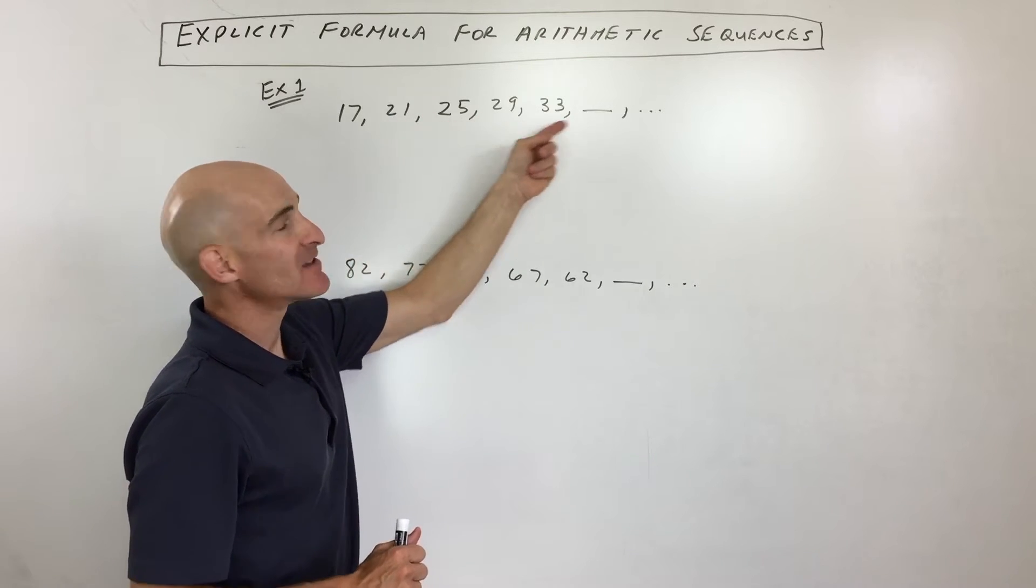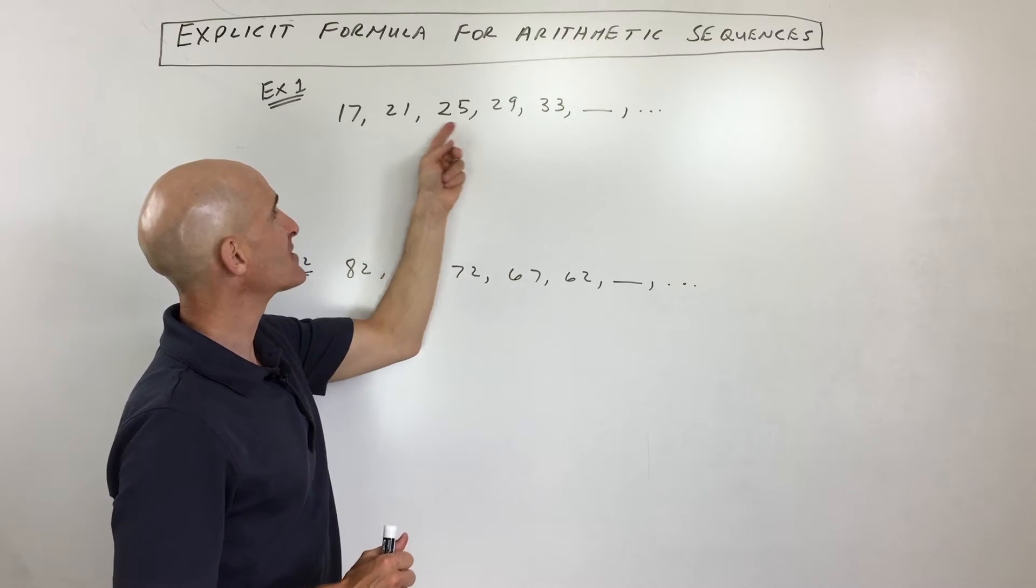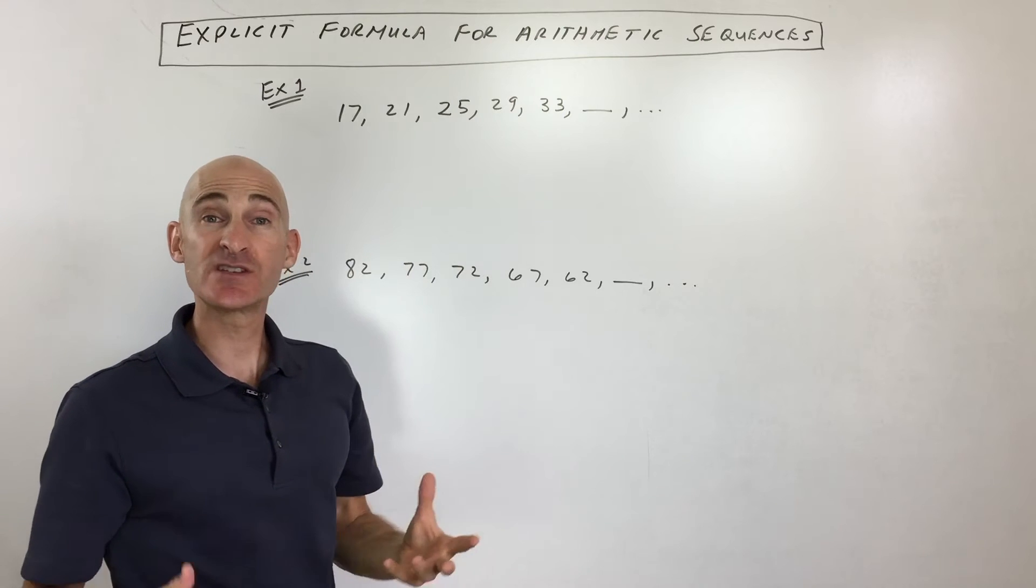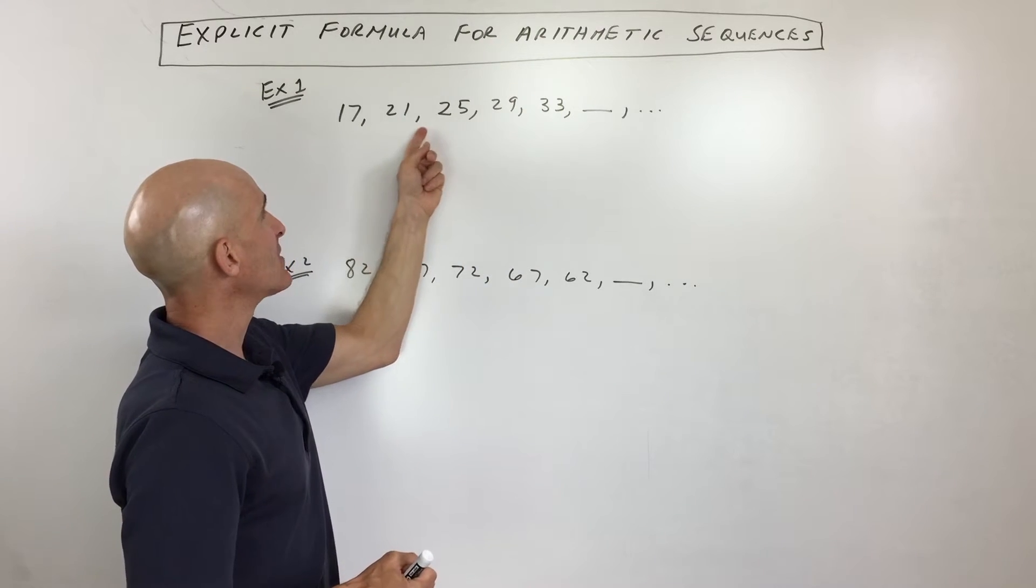Well, a sequence means it's like a list of numbers. Notice the commas here. So it's basically just a list. A series is a sum. You're adding them together. But a sequence is a list.